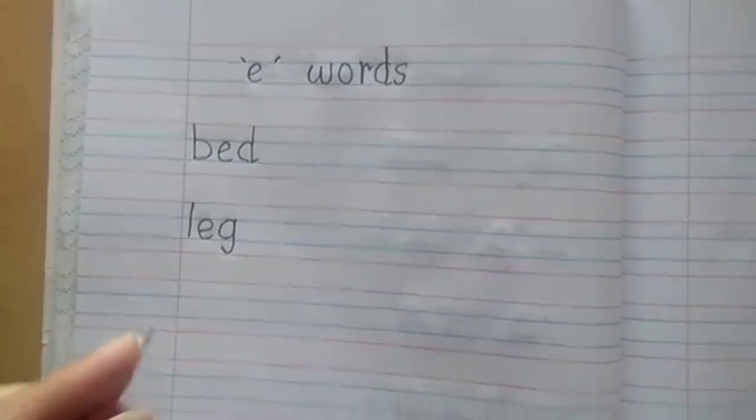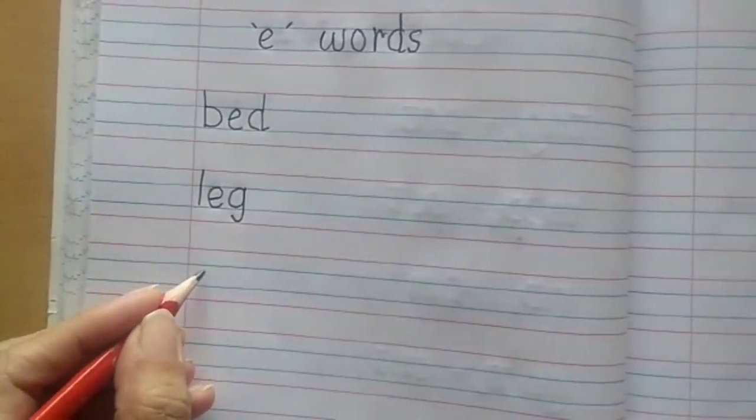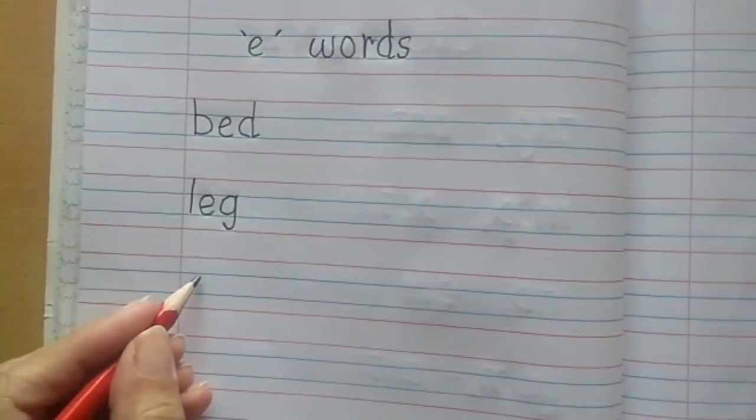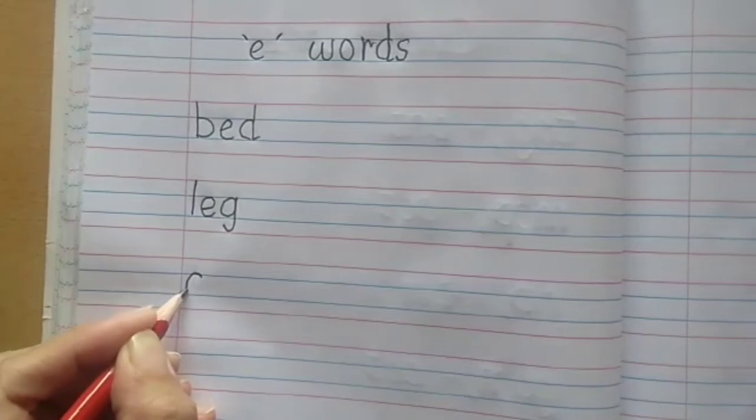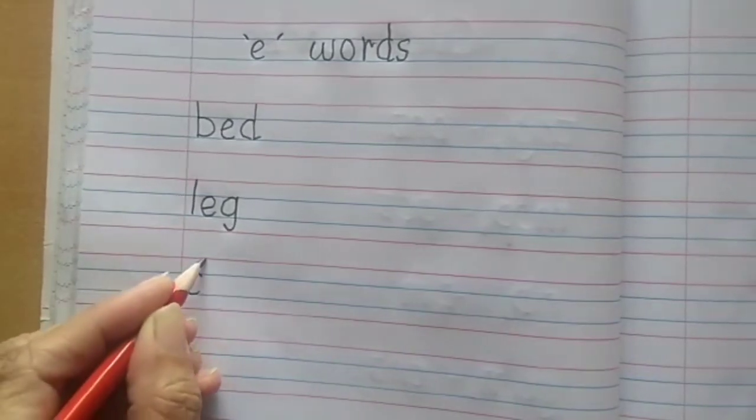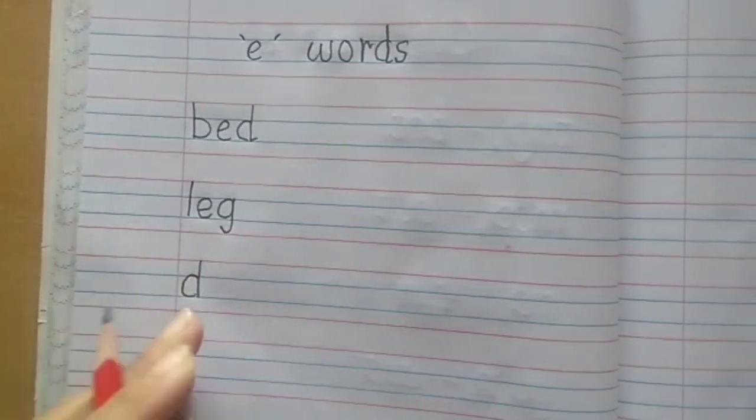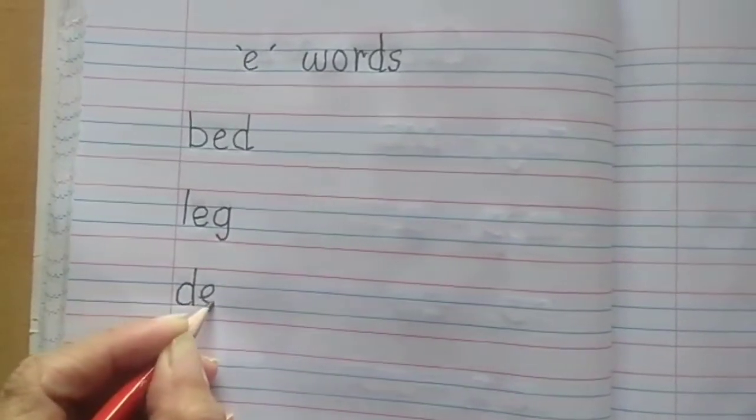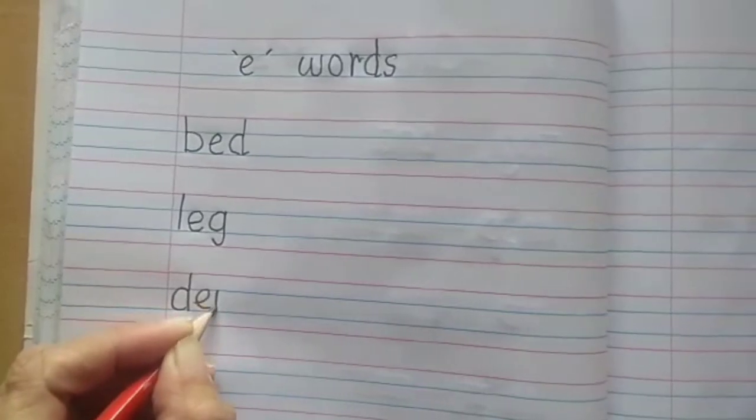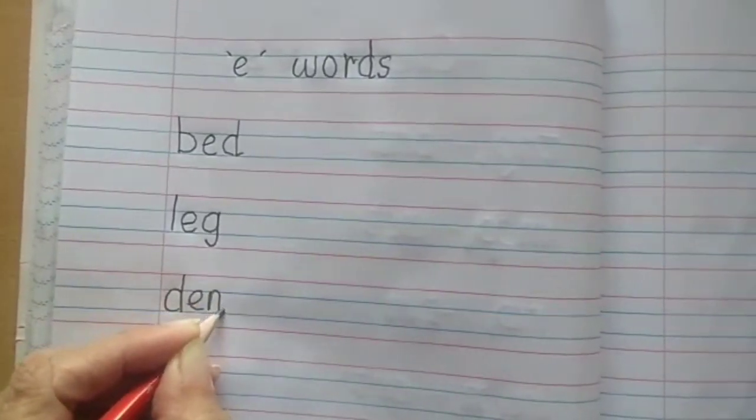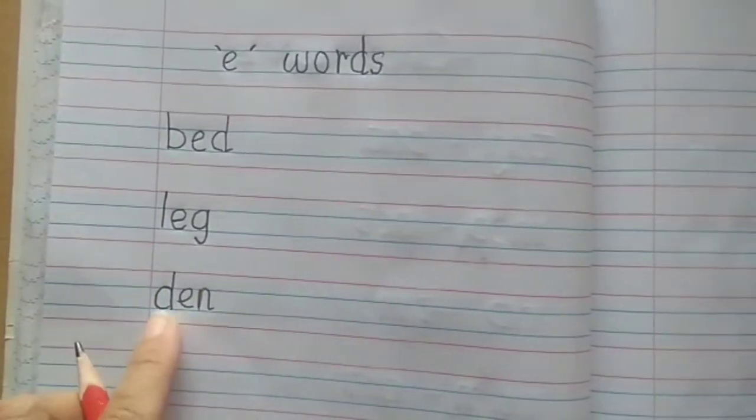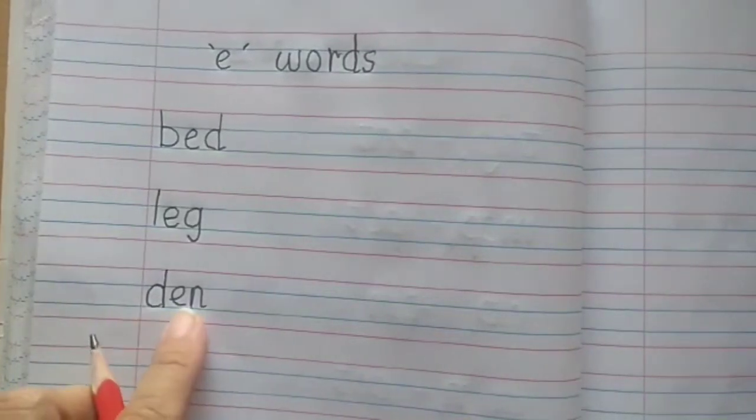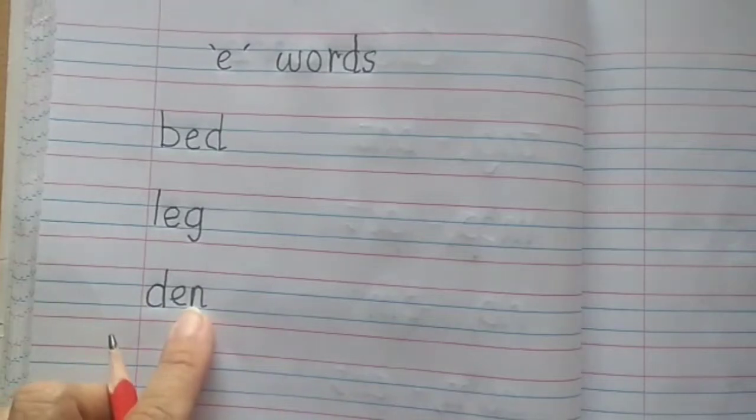Then the next word, what we will write, try to read it on your own. This time I am not going to say. Later on I will help you. Now you try to say using the phonic sound. Have you tried? D-E-N. Den.